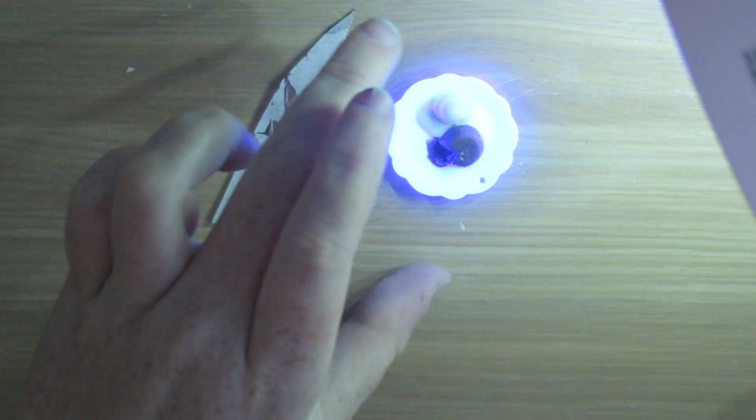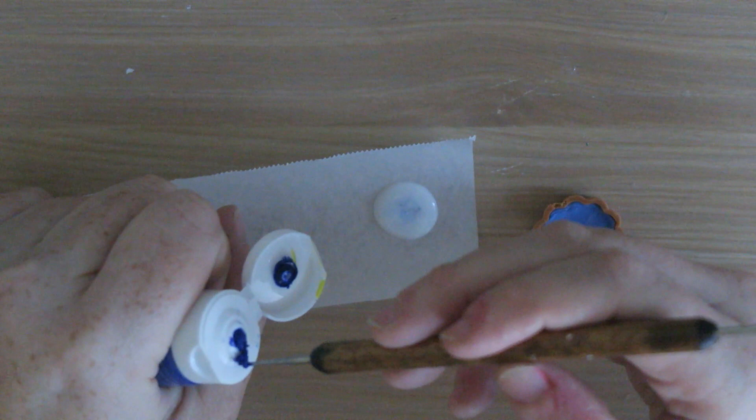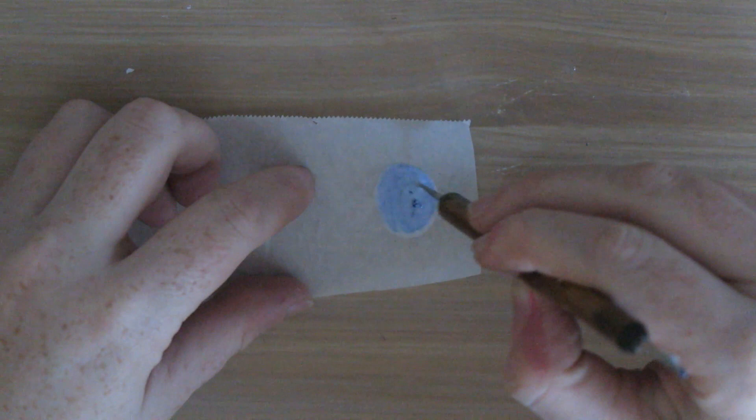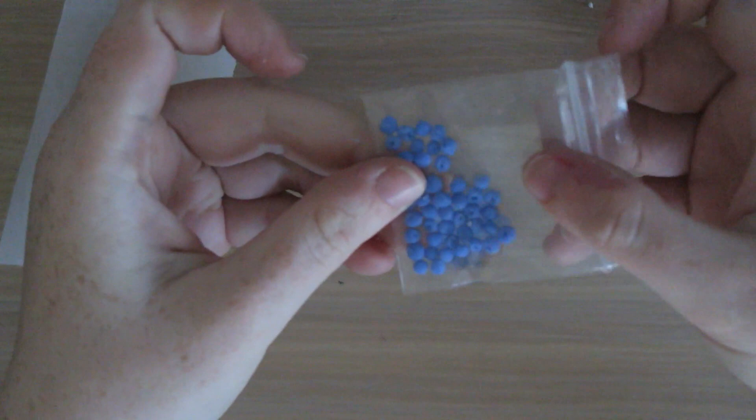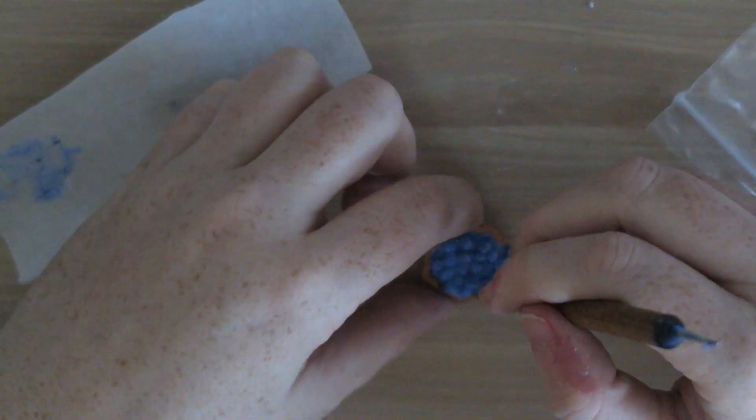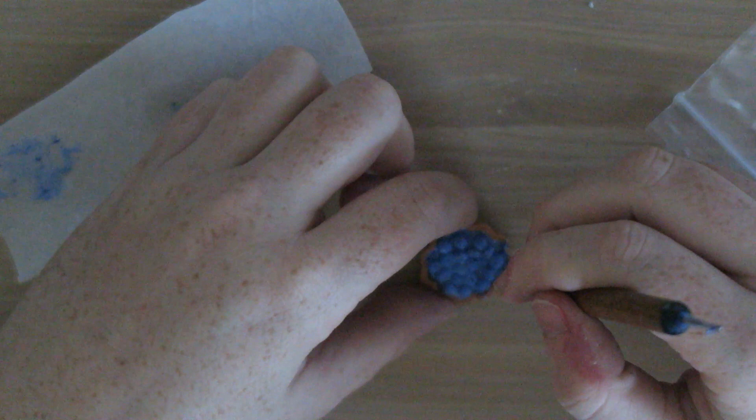And then one final way I used the 3D UV resin is I mixed in some acrylic paint again and this time I'm mixing in some blue and I'm going to be adding it to this pie that I made. And then I'm going to add a whole bunch of blueberries that I made from the air dry clay and I'm going to add it on top of the 3D UV resin and then cure it.